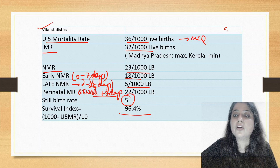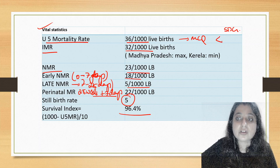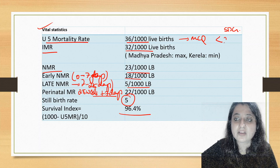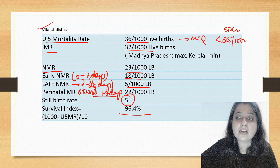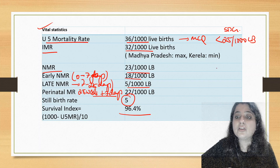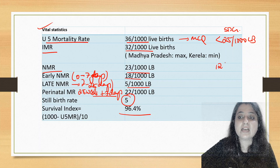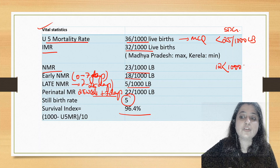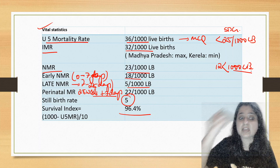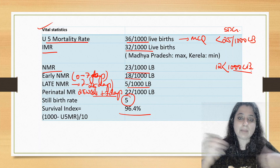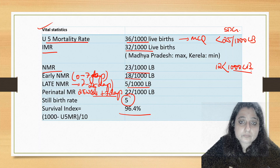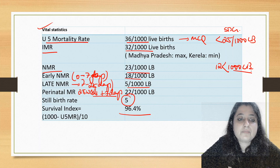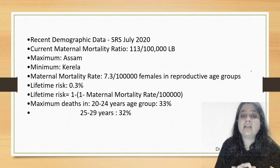According to the SDG targets, we want to reduce under-5 mortality to 25 per 1000 live births. The infant mortality rate is currently 32, and the neonatal mortality rate — which we want to reduce as per SDG — should come down to 12 per 1000 live births.